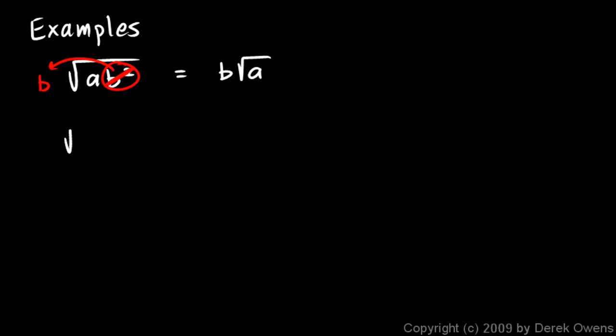Here's another example. The square root of a times b² times c³. Let's rewrite this one time just to help us think it through. I'm going to write it as a times b² times c² times c. All I've done is change the c³ to a c² times c.